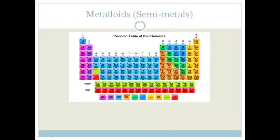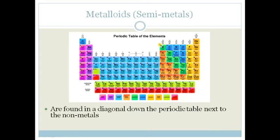Now we have metalloids or semi-metals, shown in green. They are found in a diagonal across the periodic table and can act as both metals and non-metals depending on conditions. There are only about seven metalloids.